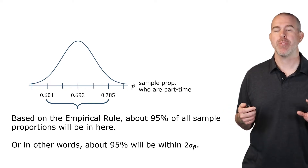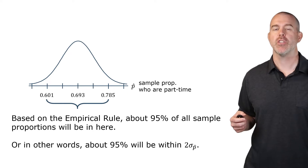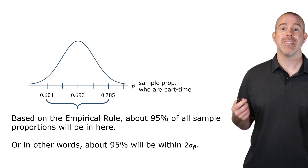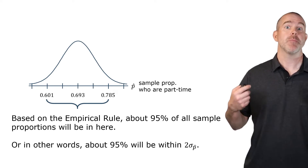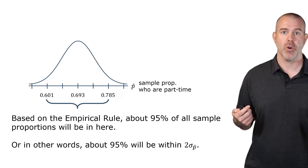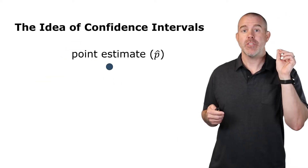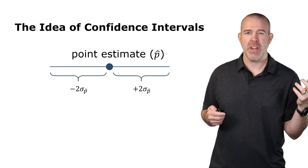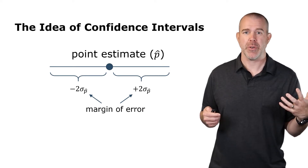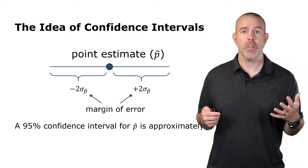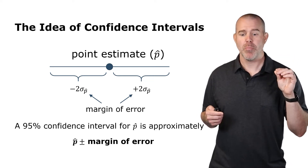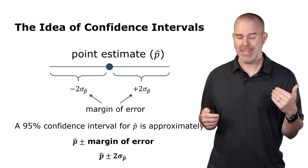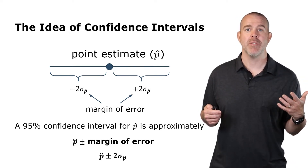95% of sample proportions should be within two standard deviations of the mean. Here's the idea behind confidence intervals: place your sample proportion in the middle, go up or down two standard deviations — that's your margin of error. A 95% confidence interval for the proportion is then p-hat plus or minus that margin of error, i.e., p-hat plus or minus two times the standard deviation of the sample proportion.